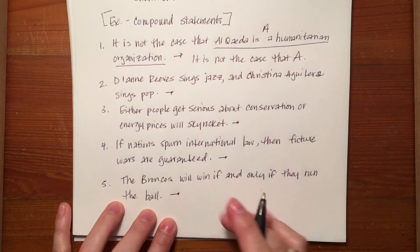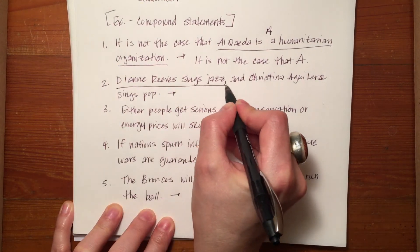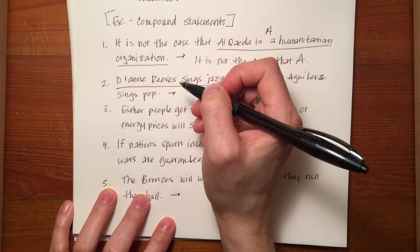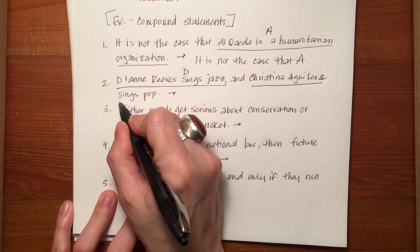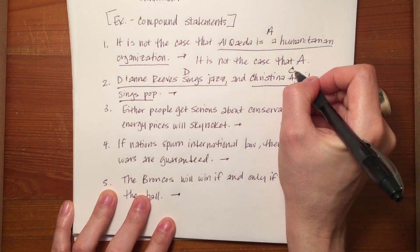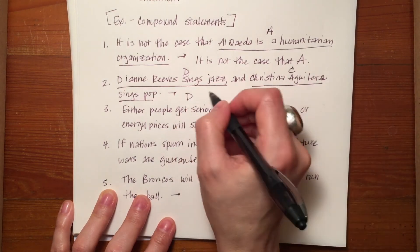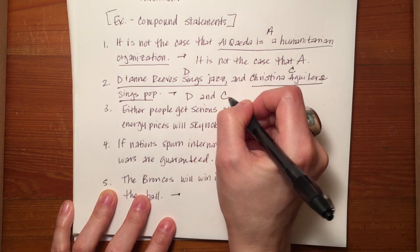If we were looking at the second example, Diane Reeves sings jazz, we could symbolize that with a D and then symbolize Christina Aguilera sings pop with a C and we'd end up with D and C.